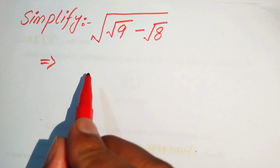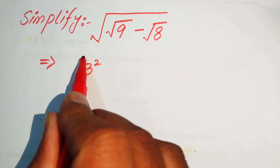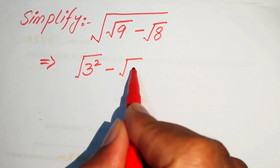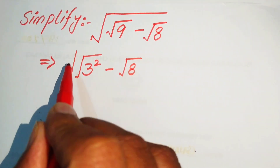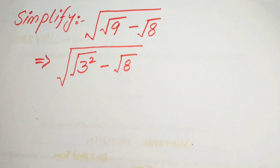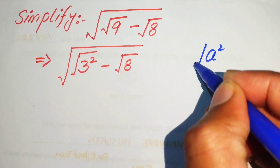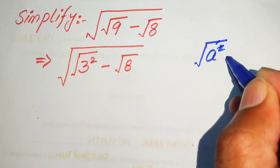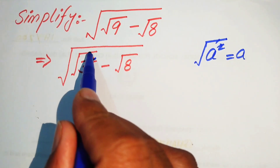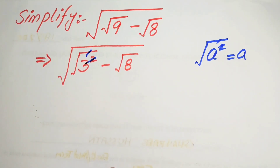We rewrite 9 as 3 squared and its whole square root, minus square root of 8 and its whole square root. Here we use the exponential law: if you have a squared and it's a square root, this 2 and the square root cancel, and you obtain a. Similarly, this 3, the 2, and square root cancel each other.